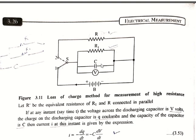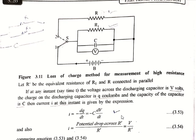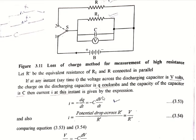For this, we have expressions and equations as follows. Let R' be the equivalent resistance of R1 and R connected in parallel when we are discharging the capacitor. If at any instant time T the discharging voltage is V, the charge on the capacitor is Q, and the capacitance is C, then the current at this instant is given by: i = −dQ/dt = −C·dV/dt.